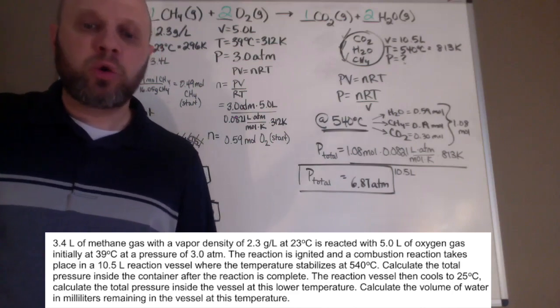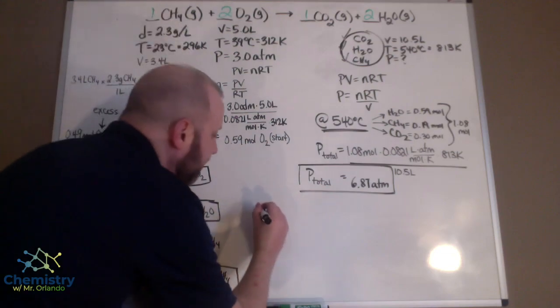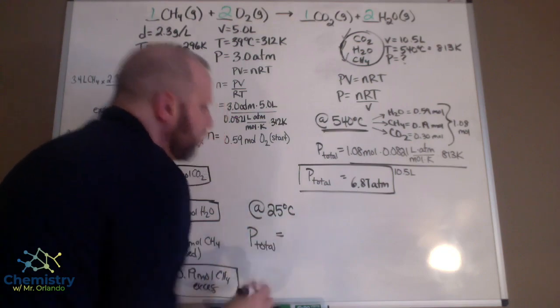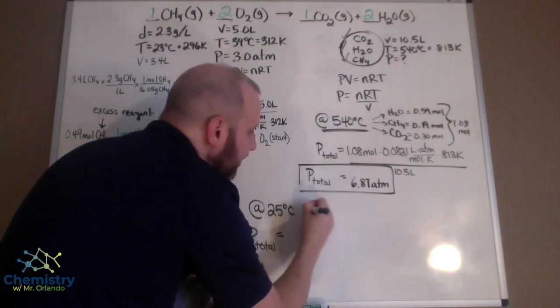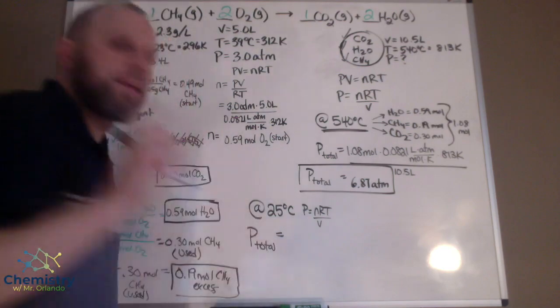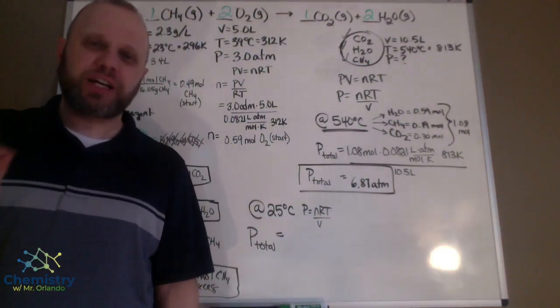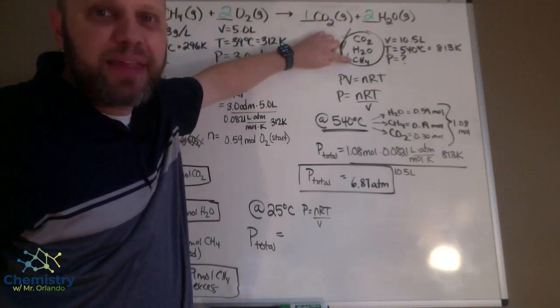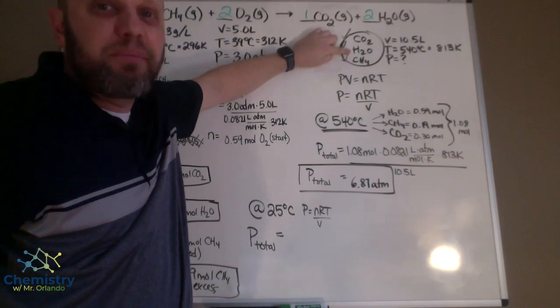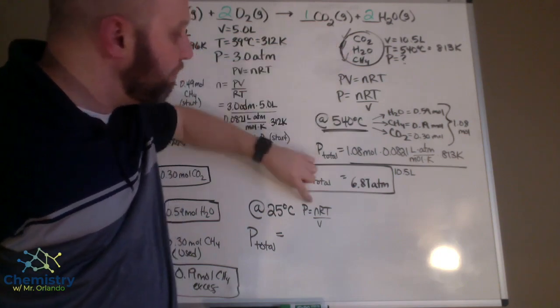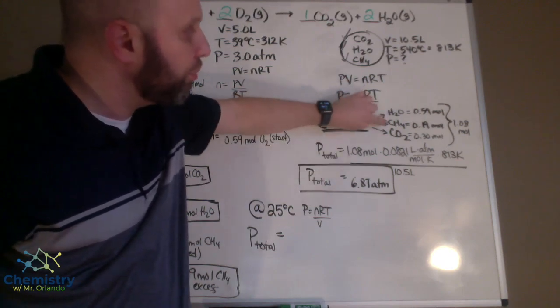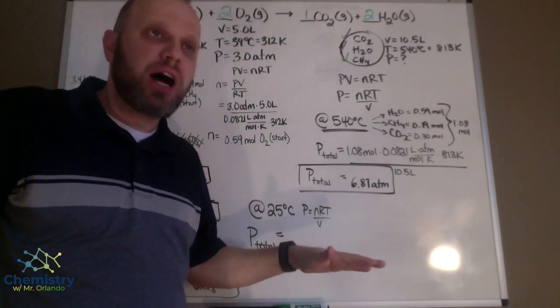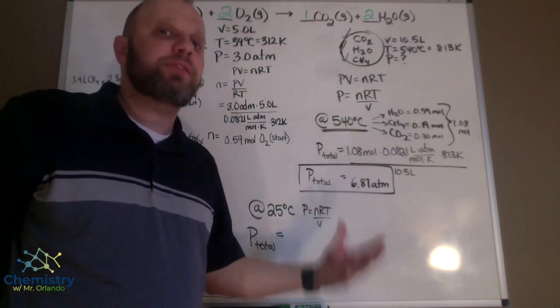The next part of the question says the reaction vessel then cools to 25°C. So at 25 degrees Celsius, what is the total pressure? We're still going to use P equals nRT over V. But think for a second. At 25 degrees Celsius, we still have carbon dioxide and methane. Both of those are gases, even at room temperature. But water is no longer a gas. So when we plug in for n, we're not going to use all three of these. We're just going to use the methane and the carbon dioxide added together. When the temperature drops, water goes through a phase change. It stops being a gas and starts being a liquid.